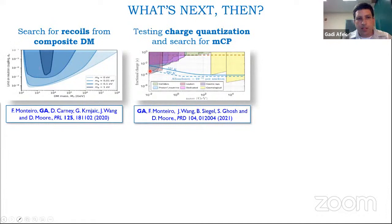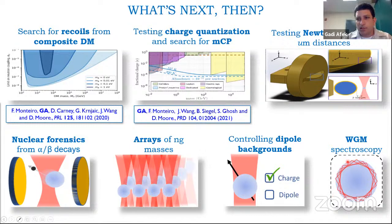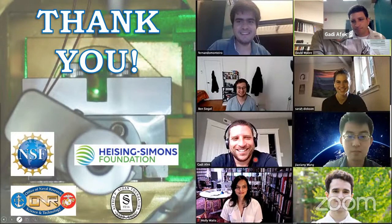Beyond these dark matter searches, the lab is also looking for deviations from Newton's law at micron distances, studying alpha recoils from spheres for nuclear forensics, building arrays of nanogram masses to control dipole backgrounds, and exploring whispering-gallery-mode spectroscopy of these spheres. Thanks to the team, especially Dave and my advisor, and to the funding agencies.